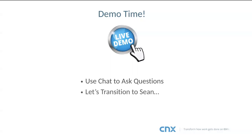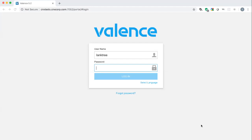Before Sean starts, we have a question from one attendee wanting to know if the handout will be made available. Yes, the handout will be available — Richard and John will arrange that at the end. Now let's transition to Sean. Richard has switched to sharing his screen.